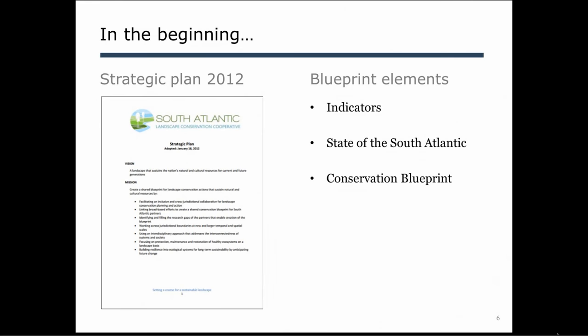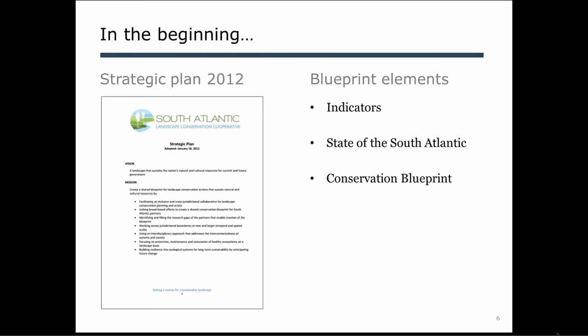There are really three pieces to that blueprint framework. First, you need some kind of indicators — shared measures of success as a group, which is pretty essential when a bunch of folks are working together. Then we wanted a state of the South Atlantic: what are those indicators telling us about the ecosystem, how are we doing? And then the blueprint itself — this living spatial plan for how we're going to get the indicators into the condition we want them to be in. That was generally the framework, and early 2012 is when we started on step one: we need some indicators. How do we pick them?